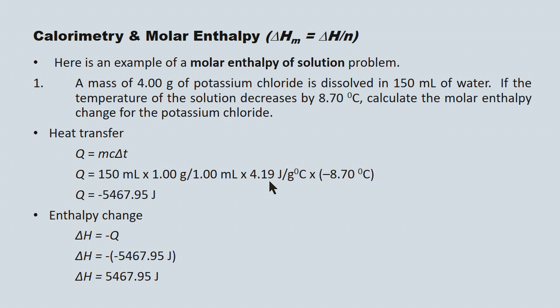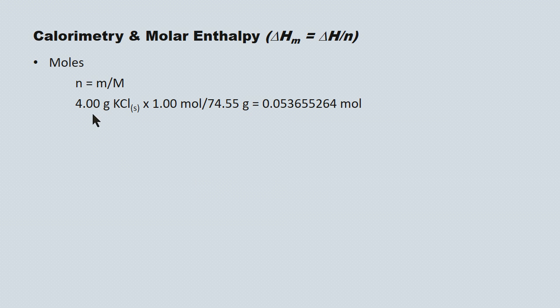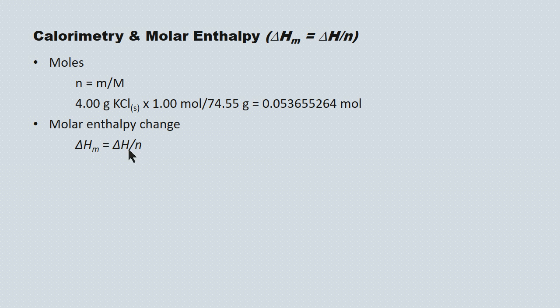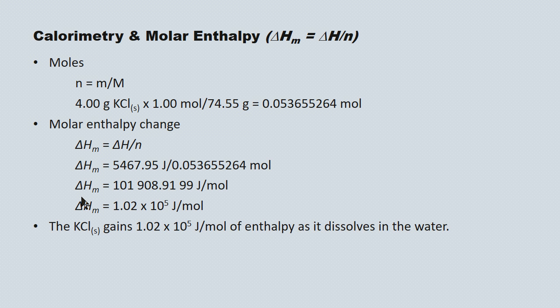Next we do a stoichiometry step to determine how many moles of potassium chloride were dissolving. Using n equals m over M, where little m is the mass used and big M is the molar mass, we substitute in our 4.00 grams and get 0.0536 moles of potassium chloride. The molar enthalpy change equals total enthalpy change over number of moles, giving a value of just over 100,000 joules per mole — applying significant figures, 1.02 times 10 to the 5 joules per mole. The potassium chloride gains 1.02 times 10 to the 5 joules per mole of enthalpy as it dissolves — it's an endothermic process.